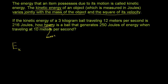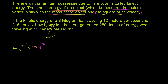Kinetic energy varies jointly with the mass of the object — I'll call that m — and the square of its velocity — I'll call that v, so v squared. That gives us the equation: kinetic energy equals k times m times v squared. Now we need to figure out what this constant k is.